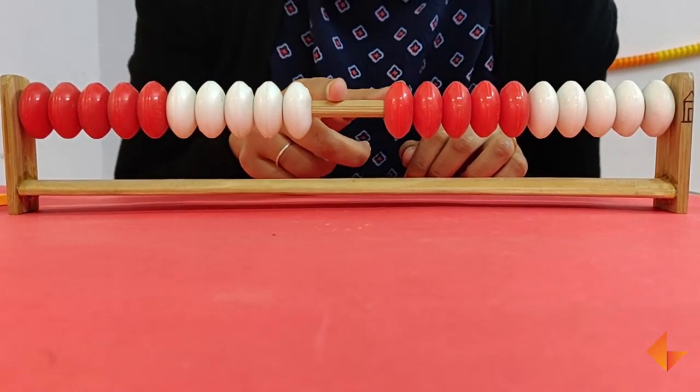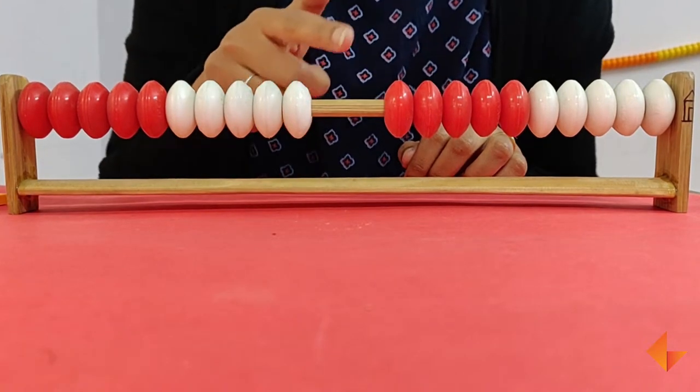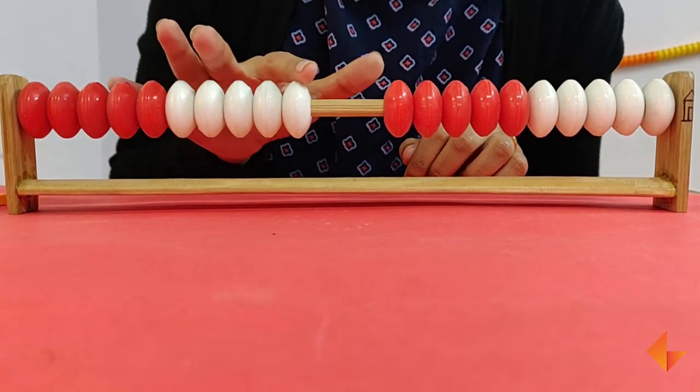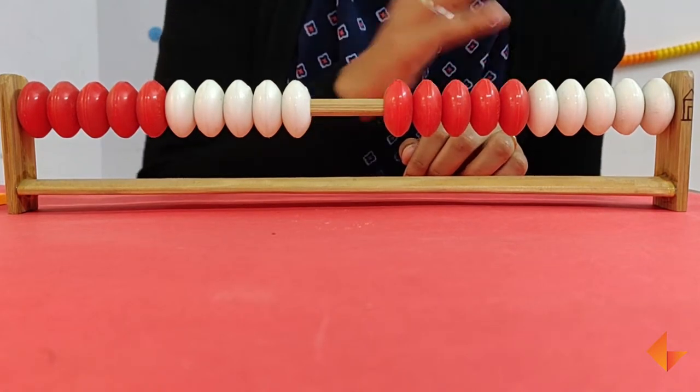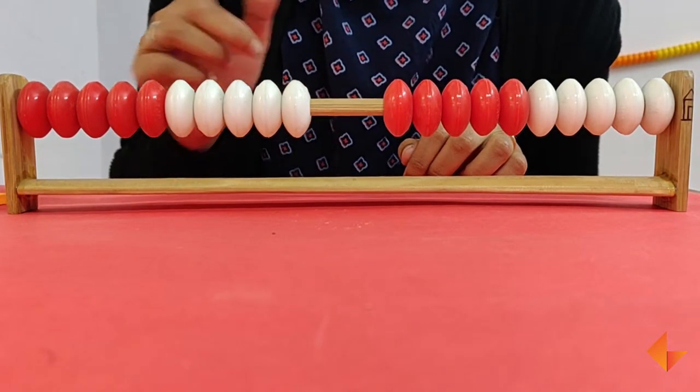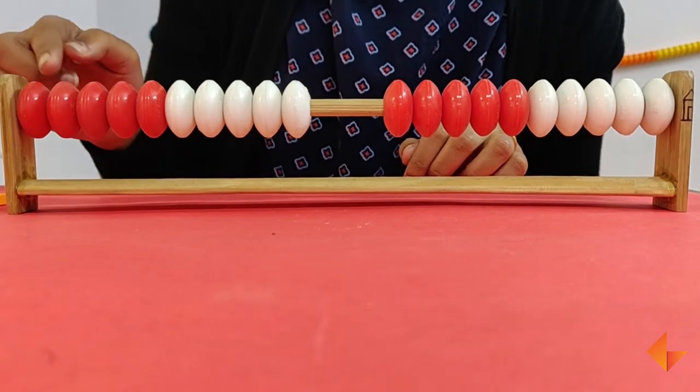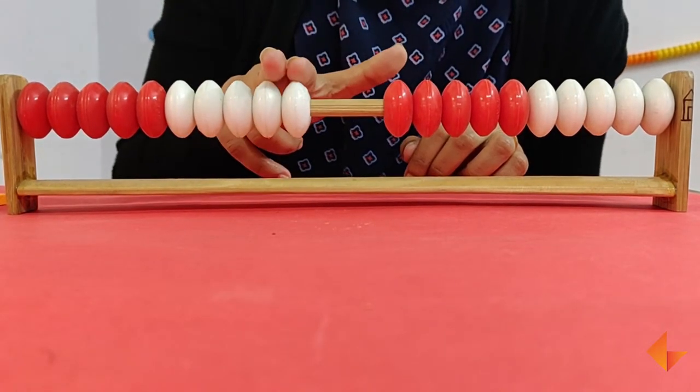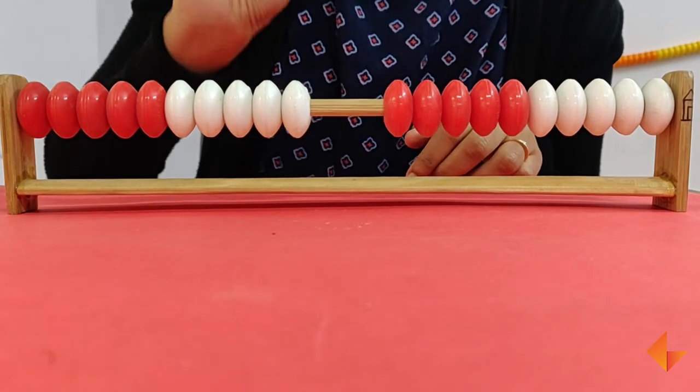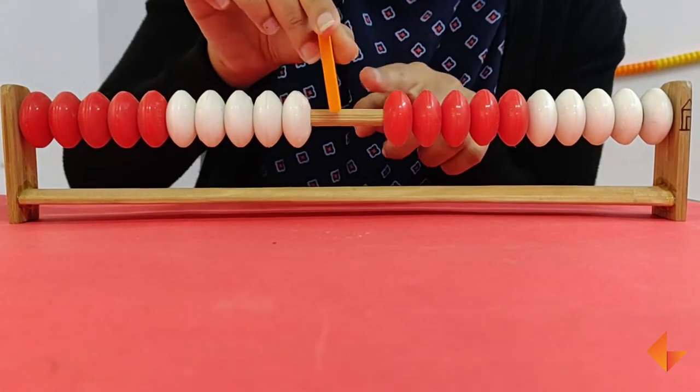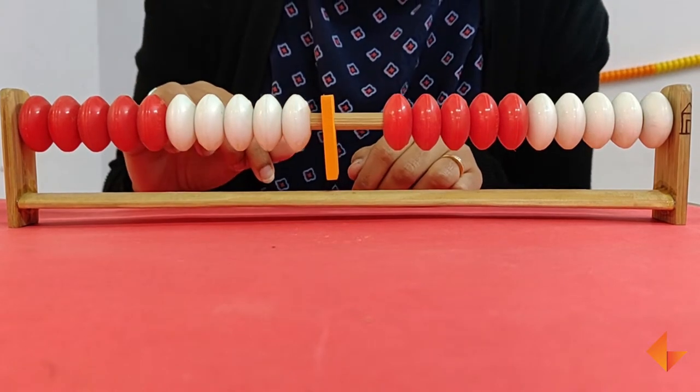Start with counting up to 10, and once the children are comfortable with numbers from 1 to 10, you can choose to continue with numbers 11 onwards. When you have stopped counting at a certain point, tell the children we have counted until 10 and pick up your butterfly and place it on the ganith rack at that point.